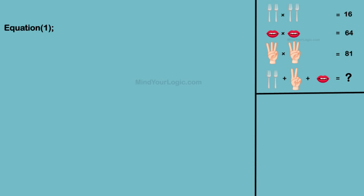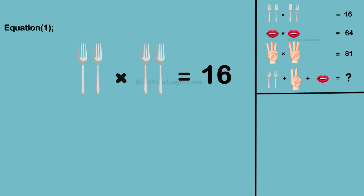Initiating with equation 1: 2 fork multiplied by 2 fork equals 16. On solving we get the value of 1 fork as 2.